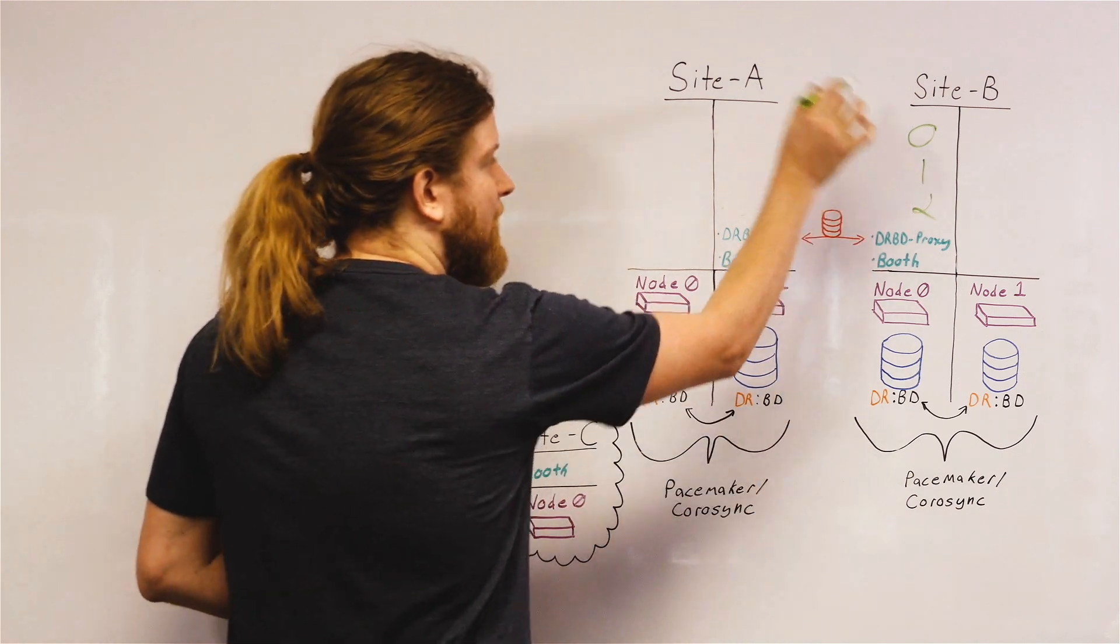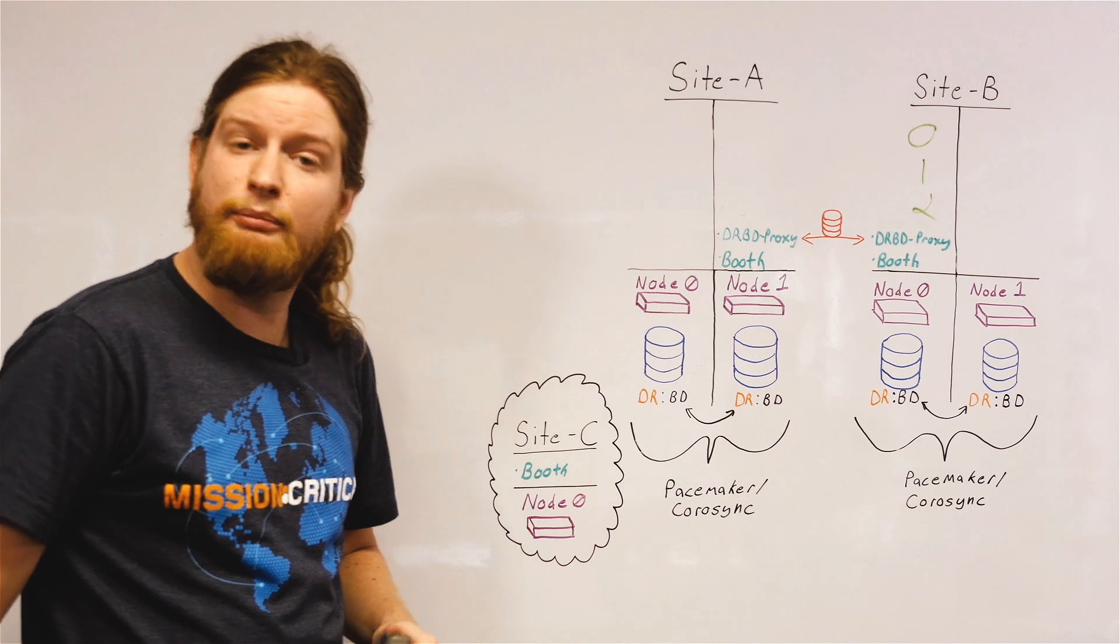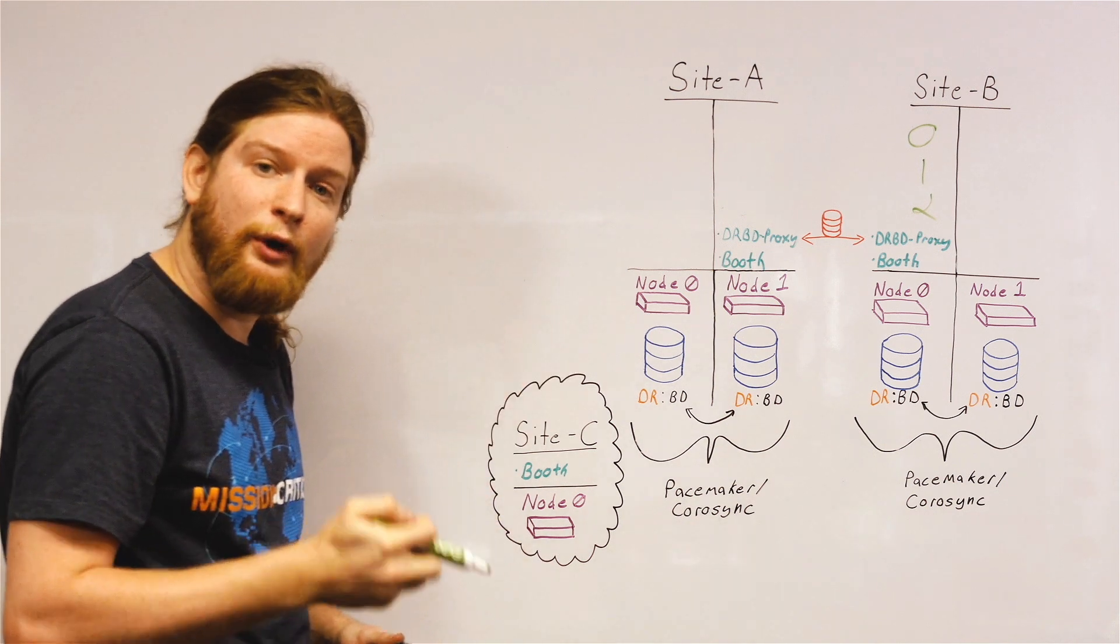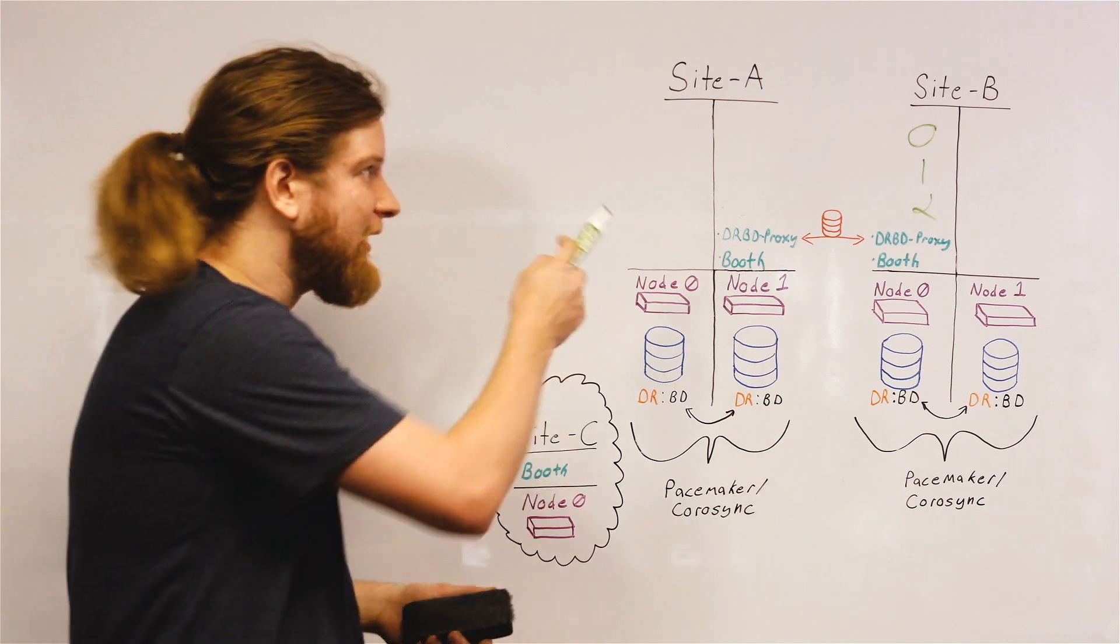So the only way that services 0, 1, and 2 are running on site B is if Booth has decided that site B can run those services. And the way it does that is with a vote. You need more than two nodes to vote. In this case, a site is a node.